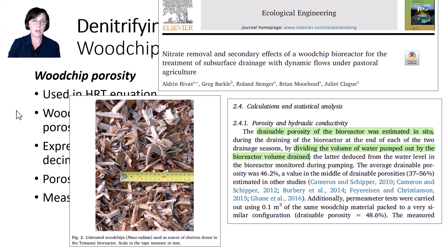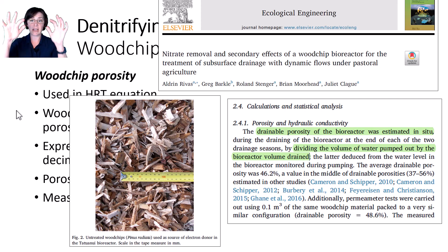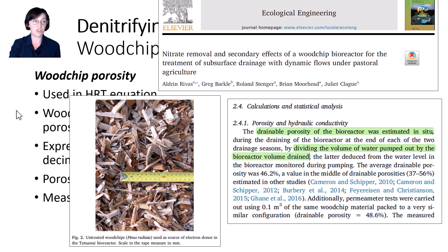You can also estimate drainable porosity in situ or on site by flooding a bioreactor and then draining or pumping that water out and measuring the volume as it drains out. You just also have to know the volume of woodchips that you flooded.